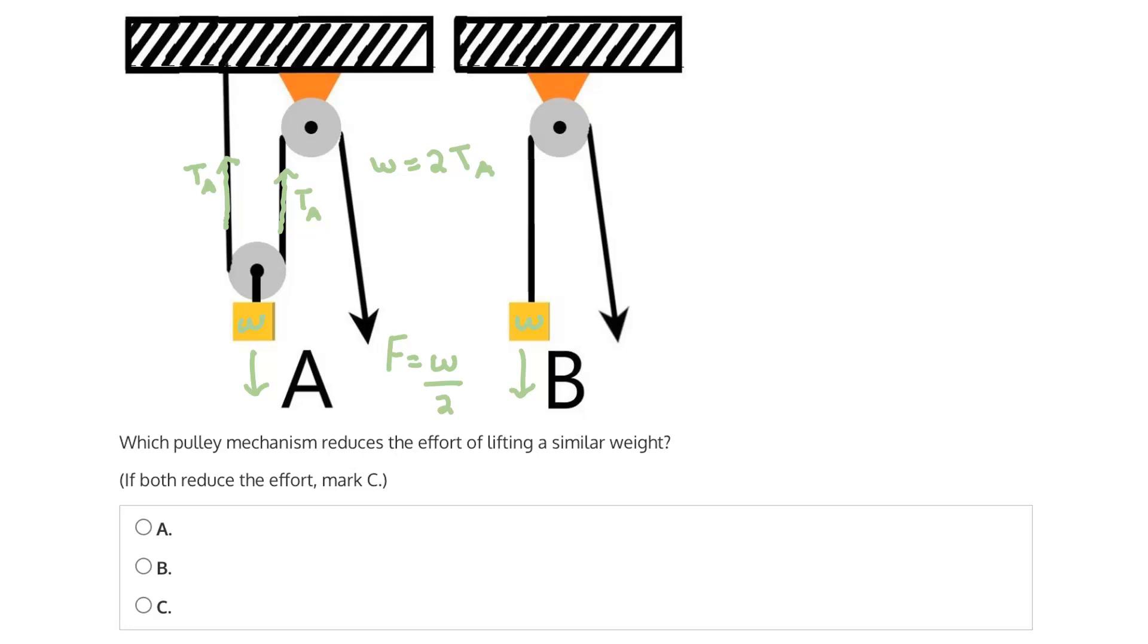Together, they equal the total tension, which must equal the load, or the weight. So because we have this splitting of the tension in A, and we don't have it in B, where the force equals the weight, we know that A reduces the effort. It requires less force to lift the load in A.